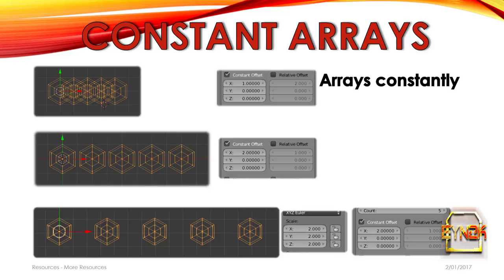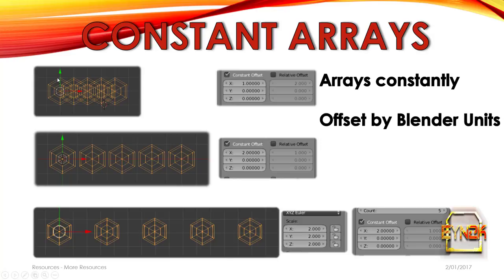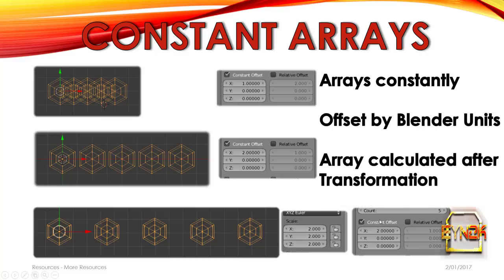Constant arrays work similarly, but use Blender Units to calculate the array offset rather than the actual object size. We are arraying along the x-axis but offsetting by Blender Units — at the top, one Blender Unit; in the middle, two Blender Units. Down at the bottom, a scale has been applied to the object, so we can either press Ctrl+A to apply the scale, or adjust the input value manually. It depends on what you're dealing with and what's most important for your results.